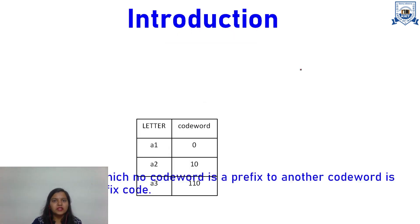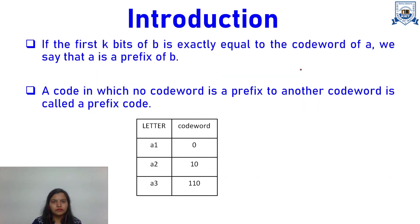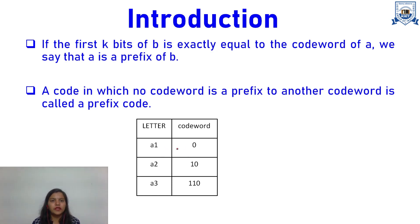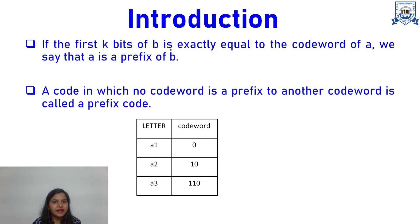So the question is: what is prefix code? Here you can see a table in which we have some letters a1, a2, a3 — these are the letters and these are the code words given to each letter. We will say a particular code word is a prefix of another code word if the first k bits of that code word are exactly equal to code word a.